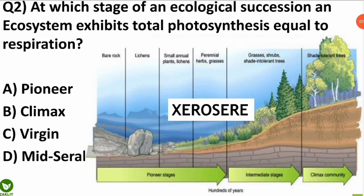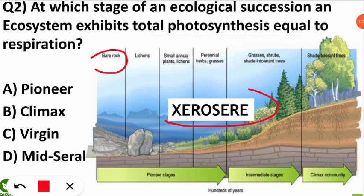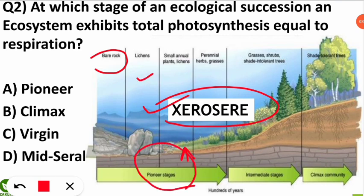Here is a brief example of succession on bare rock, which is called a xerosere succession — where succession starts from a place lacking water. It can be on rocks or in desert areas. The initial organisms to grow are small mosses and lichens, called the pioneer stage. These pioneer organisms develop initially, and then gradually small shrubs and herbs emerge, called the intermediate or mid-seral stage.